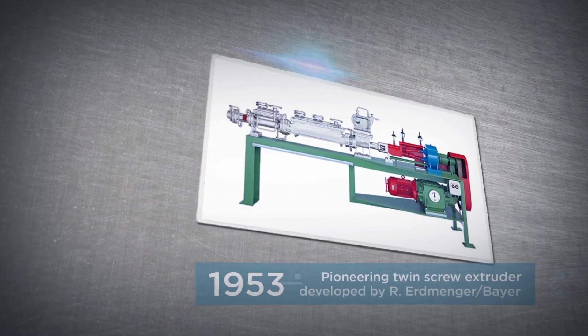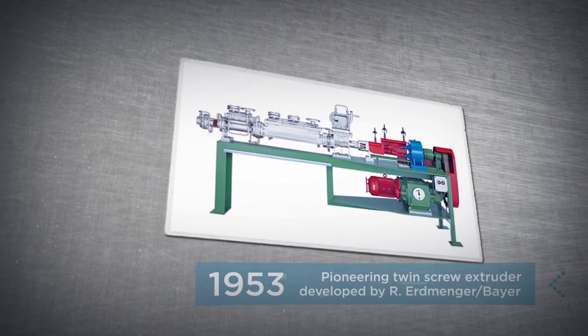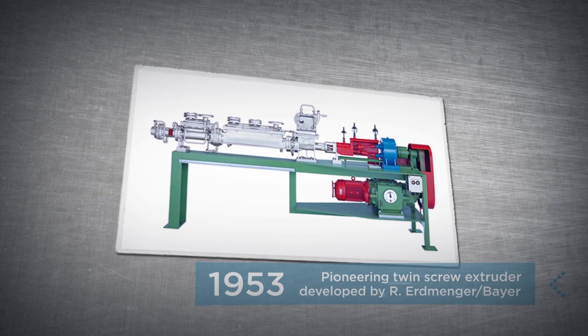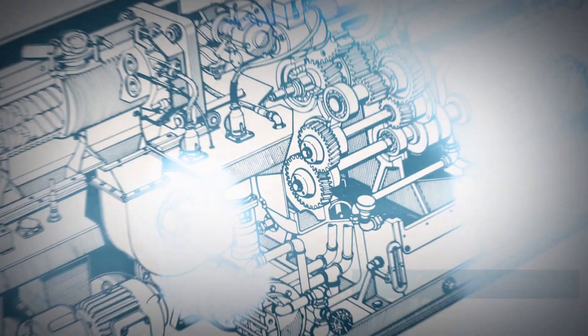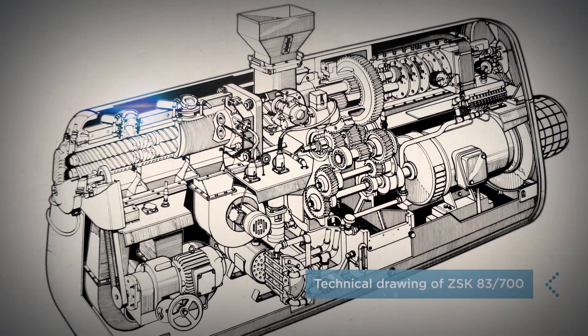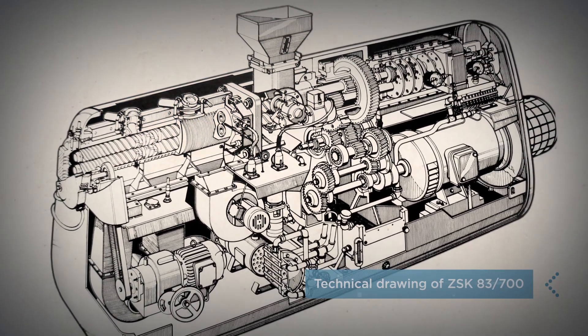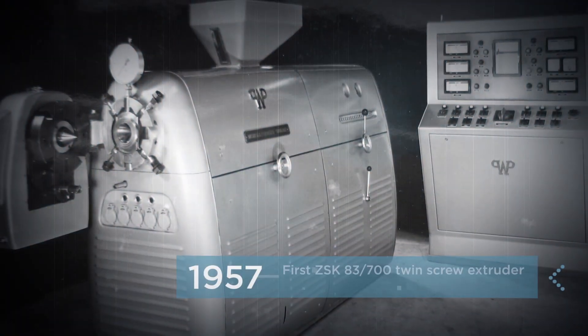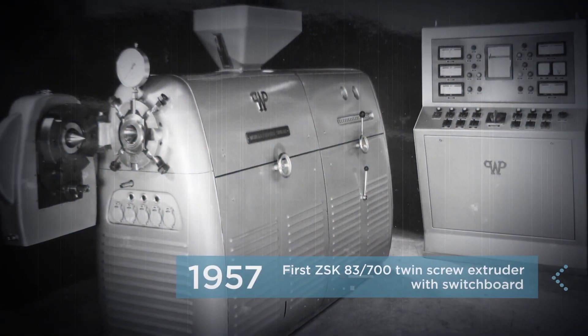The success story of the ZSK series began in 1953 when Werner and Flederer acquired the Erdminger patent. Werner and Flederer invested another four years of development work before the first machines were ready to go into production. The first twin-screw extruder, a ZSK-83, was then sold and delivered in 1957.